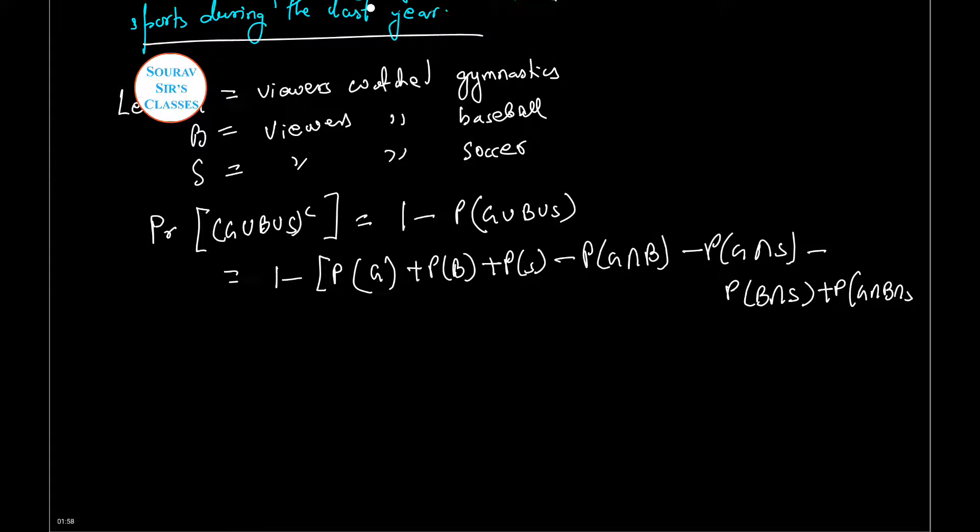Thus on expanding it comes to the following. Now let us put the values: 1 minus 0.28 plus 0.29, that is since those were expressed in percentage we can write this as the following: 0.10 and 0.12 plus 0.08.